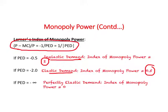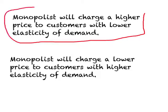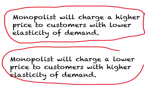When monopoly power is higher, the difference between price and marginal cost is larger. A monopolist will charge a higher price to a customer with lower elasticity of demand, and a lower price to a customer with higher elasticity of demand. Lower elasticity of demand means you are more dependent on the product, so the monopolist can charge you a higher price.